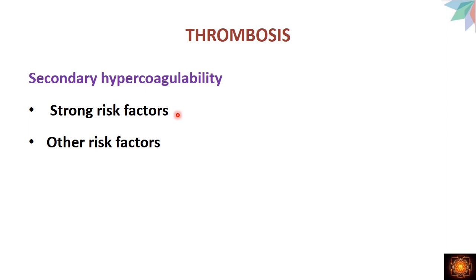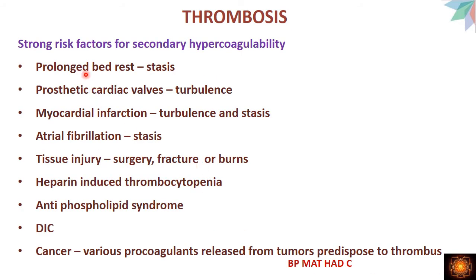For secondary hypercoagulability, there are strong risk factors and other risk factors. Strong risk factors include: prolonged bed rest causing blood stasis; prosthetic cardiac valves causing turbulence; myocardial infarction causing stasis and turbulence; atrial fibrillation causing stasis; tissue injury such as surgery, fracture, or burns releasing tissue factor; heparin-induced thrombocytopenia; antiphospholipid syndrome; DIC (disseminated intravascular coagulation); and cancer, where tumor cells produce procoagulant substances.